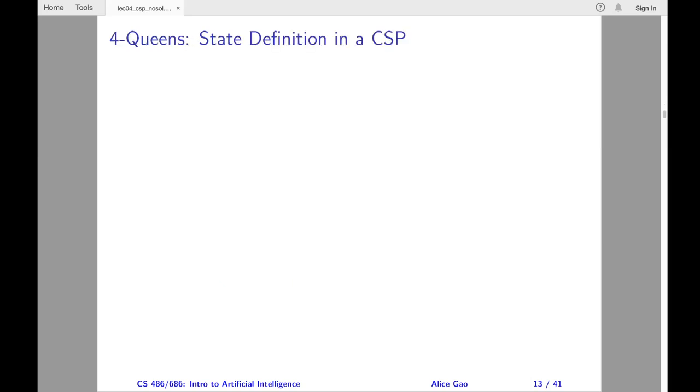Let's formulate the four queens problem as a CSP. I will focus on defining the components of a state. How should we define the variables, the domains, and the constraints?